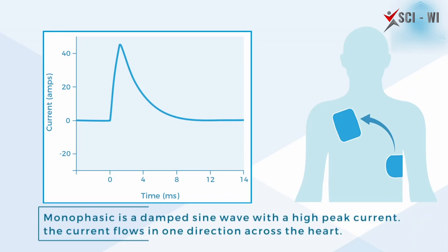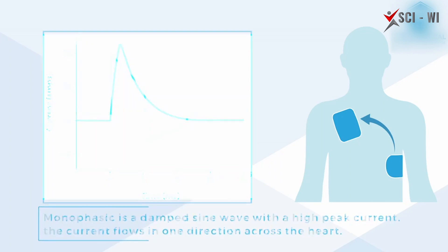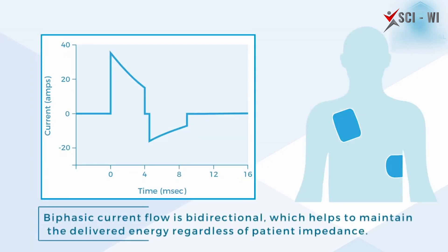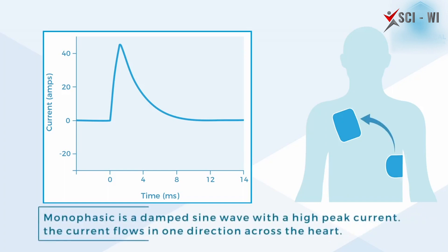In monophasic defibrillation, it sends an electrical current in a single direction from an electrode on one side of the chest to an electrode on the other side. As you can see in the video, monophasic waveform defibrillation has been used since the invention of AED devices, which means automated external defibrillators.